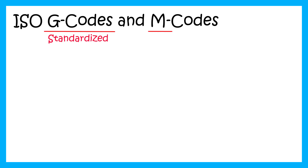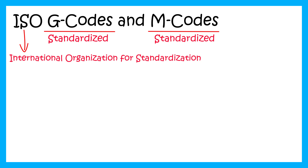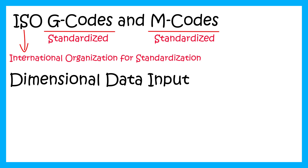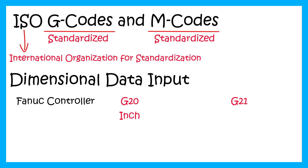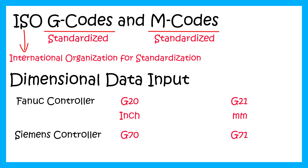Standardized G-codes and M-codes are well defined by the International Organization for Standardization, but they might vary from controller to controller. For example, units for length and diameter value in the case of FANUC controller are defined by codes G20 and G21, where G20 means dimensions in inches and G21 means dimensions in mm. On the other hand, in the case of Siemens controller, these units are defined by codes G70 and G71, where G70 means dimensions in inches and G71 means dimensions in mm.